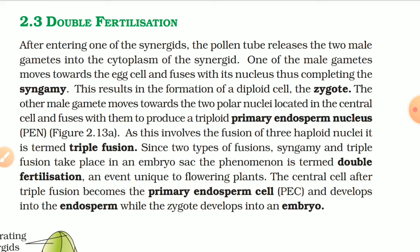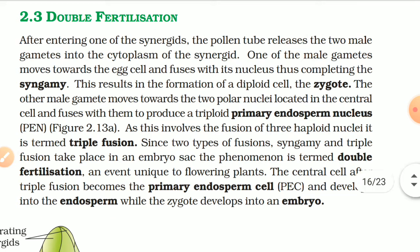Since two types of fusion — syngamy and triple fusion — take place in the embryo sac, the phenomenon is termed double fertilization, an event unique to flowering plants. The central cell after triple fusion becomes the primary endosperm cell (PEC) and develops into the endosperm, while the zygote develops into an embryo.